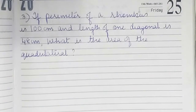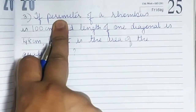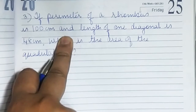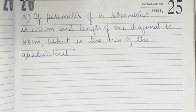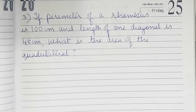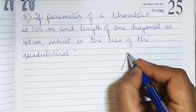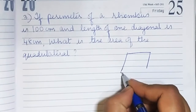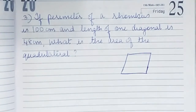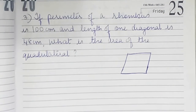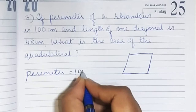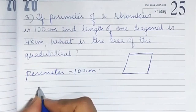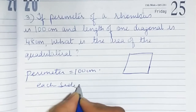Sum 3: if the perimeter of a rhombus is 100 centimetres and the length of one diagonal is 48, what is the area? Now perimeter has come into the picture. We draw a rough figure. Perimeter is 100. We know all sides of a rhombus are equal, so if the perimeter is 100 centimetres, each side will be 100 divided by 4.